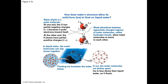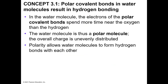How does water's structure allow it to form solid ice? Why does a solid float on top of the liquid? It has to do with the unique structure of the water molecule. Water molecules are polar molecules and they have special attractions called hydrogen bonds that give them their unique bonding to each other. Because of this attraction, when water freezes and becomes a solid, it forms a crystalline structure that is less dense than the liquid, which allows solid ice to float.